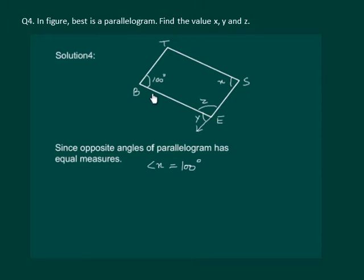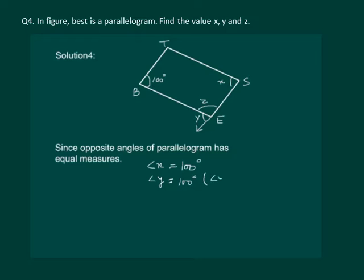Also, we know that BE and TS are parallel sides of the parallelogram. We know that angle x is 100 and this is a transversal. So, angle x should also be equal to angle y as they are corresponding angles. We can write that angle y is also equal to 100 degrees, as angle y is a corresponding angle.